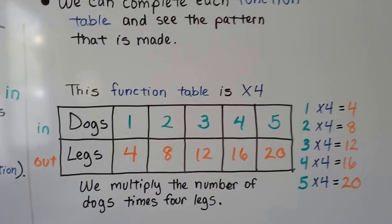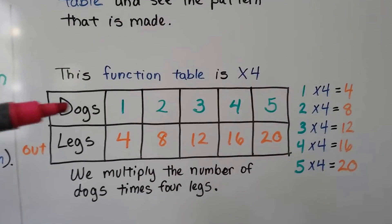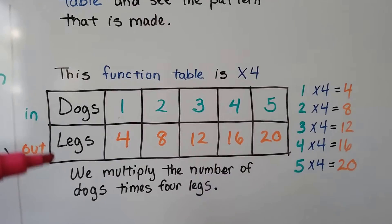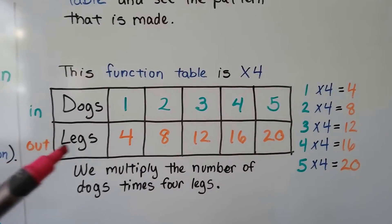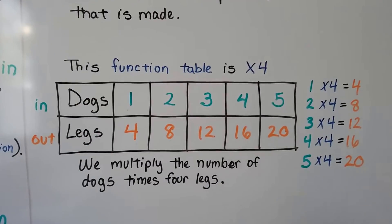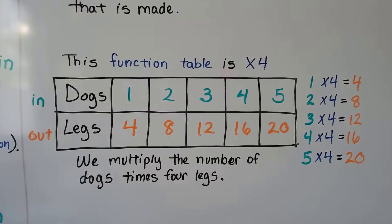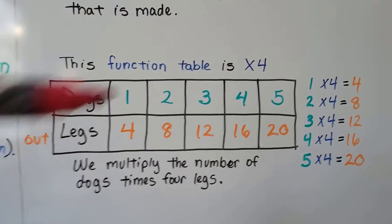So here, this function table is times 4. Every number of dogs that we put in, we're going to multiply it by 4 to see the legs that it has. So one dog has 4 legs. If we have 2 dogs, 2 times 4, that's 8 legs.